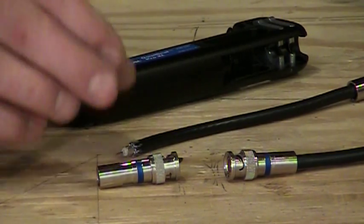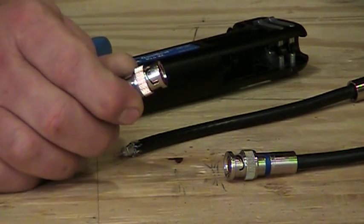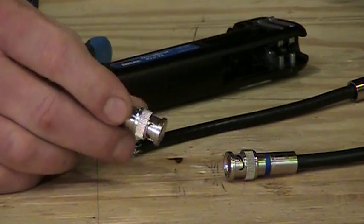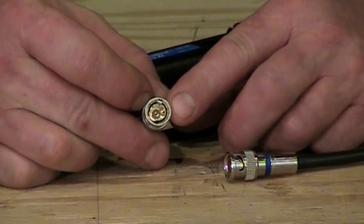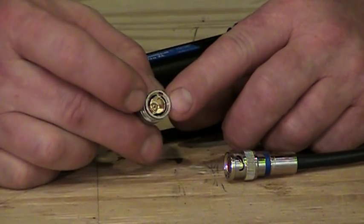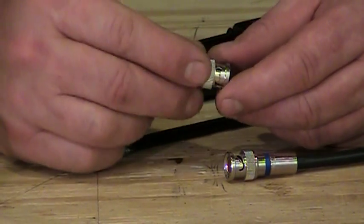Now, an interesting thing about BNCs, and they've been around about forever, probably since the 1930s, one big thing is that they have a little pin inside the front of the connector that actually makes the connection to the mating half when we attach the two together.